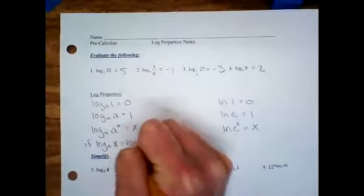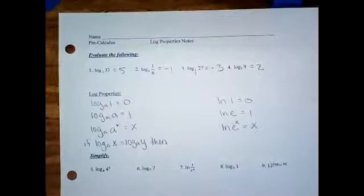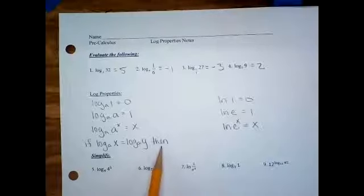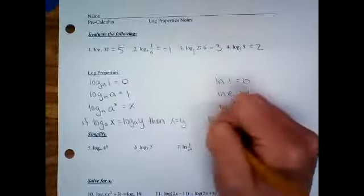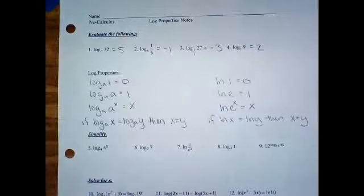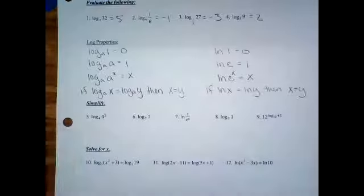The last property: if log base a of x equals log base a of y, then x equals y — you just set the insides equal. Do you remember if-then statements from geometry? If log base a of x equals log base a of y, then x equals y. Same thing for ln: if ln of x equals ln of y, then x equals y. This is not different information; I just write out the ln version because it looks different and confuses people.